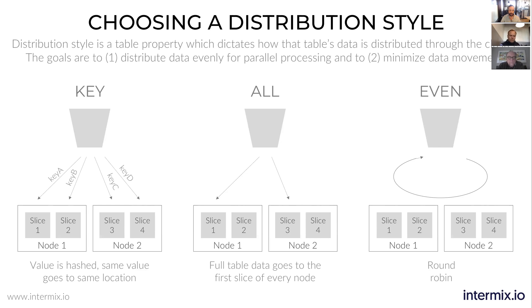Redshift solves that by allowing you to select a key-based distribution style where you define one column as the key. Redshift will then ensure that rows across those two tables with the same value in that particular column will be collocated on the same node. That means when you're joining, you don't have to pay the price of moving data around.